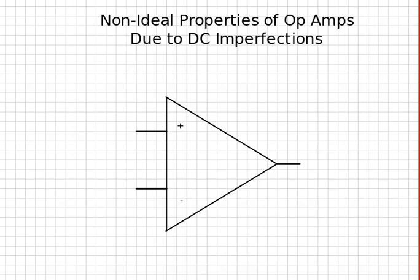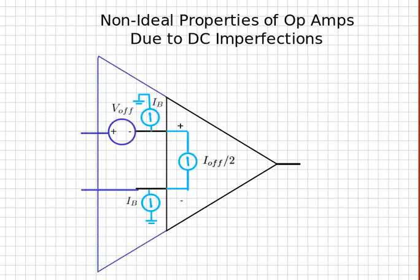Let's show you a picture here of the imperfection parameters that allow us to calculate what the output offset voltage will be. There are three of them. The first one is the input offset voltage, labeled right here. Then there are the input bias currents, IB.